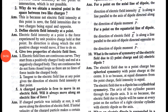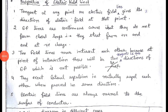Now the next question: give two properties of electric field lines. The first property is that the tangent at any point on an electric field line gives the direction of the electric field at that point. The second property is that two electric field lines can never intersect each other, because at the point of intersection there will be two tangents, meaning two directions of electric field, which is not possible.